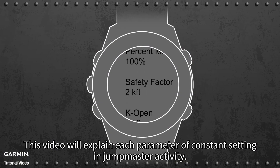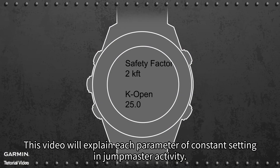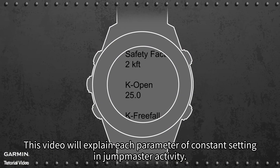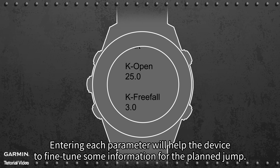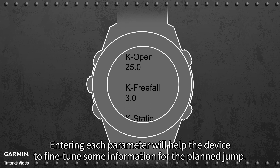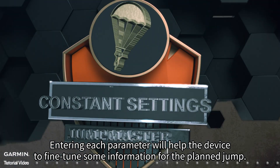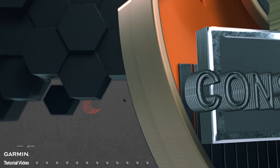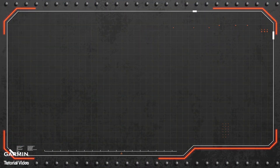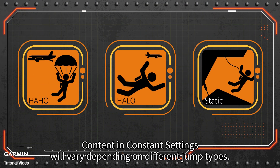This video will explain each parameter of constant settings in Jump Master activity. Entering each parameter will help the device to fine-tune some information for the planned jump. Constant settings content in constant settings will vary depending on different jump types.